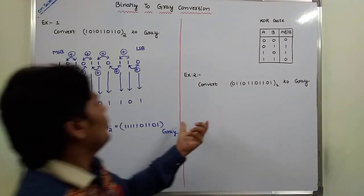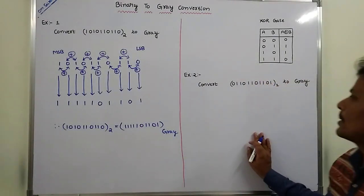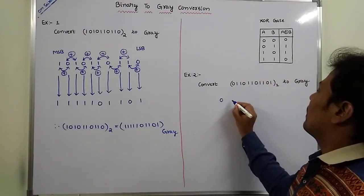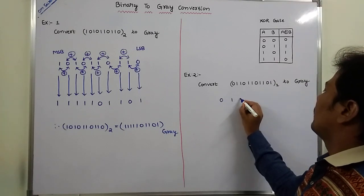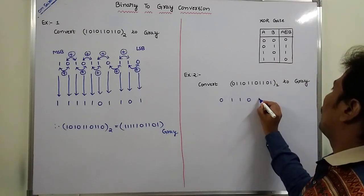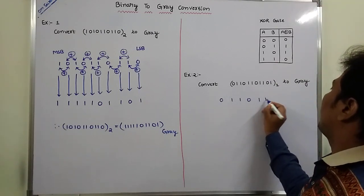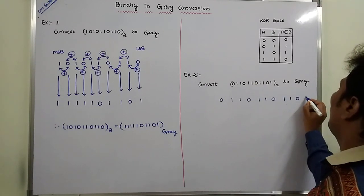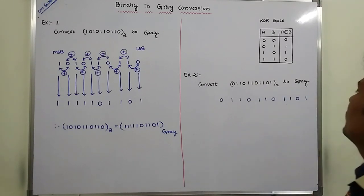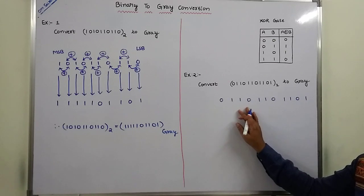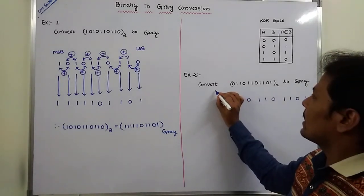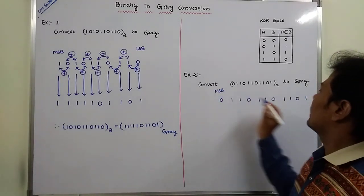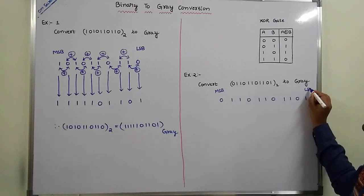Next, we go for another example. The given binary number is 011101101101. This is the MSB bit and this is the LSB bit.